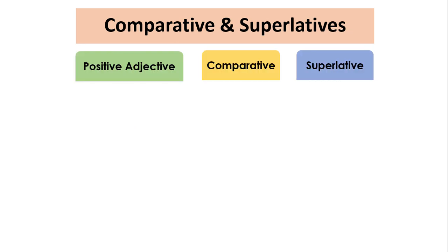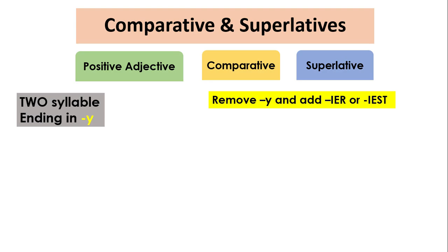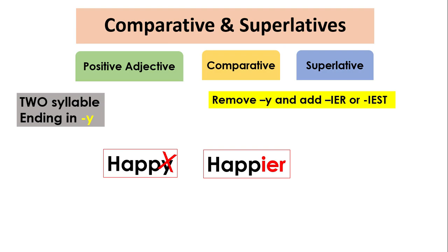When an adjective has two syllables and ends in the letter Y, we remove Y and add IER for the comparative and IEST for the superlative degree. For example, the adjective 'happy' will be 'happier' by removing Y and adding IER. Similarly, 'happiest' for the superlative degree.